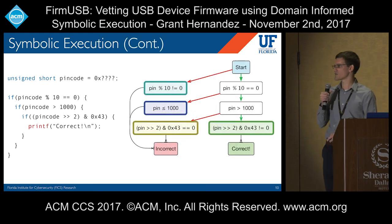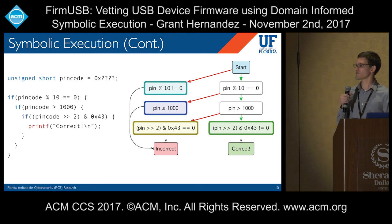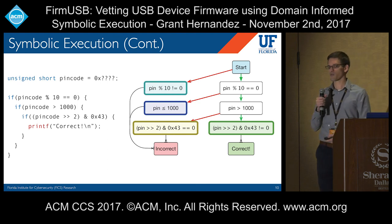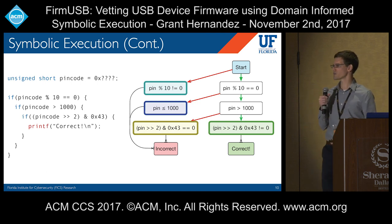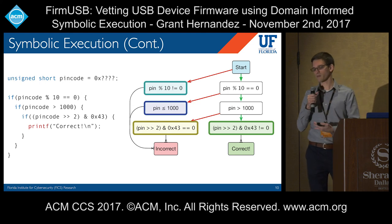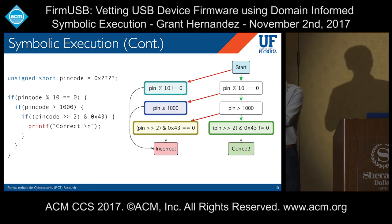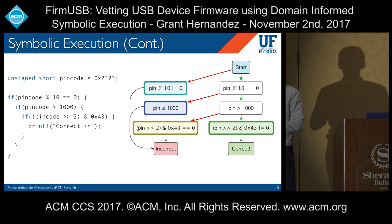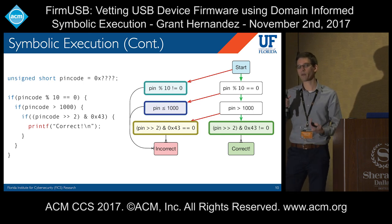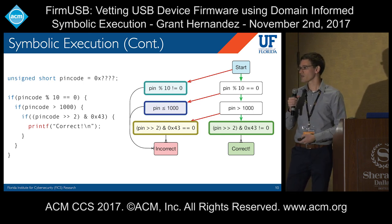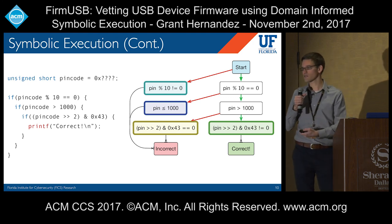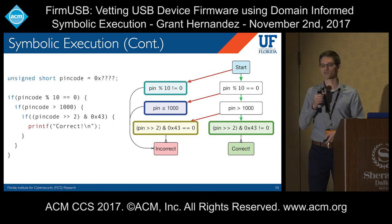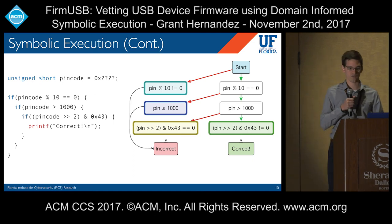If you start symbolic execution at the start statement, you begin with one path or state. At each decision — left or right, true or false — if the pin variable is symbolic, meaning it can take on more than one value rather than a fixed concrete value, you must split into two states because there are two possibilities. Next step would be three states, then four states. Finally, one state reaches the correct statement with constraints applied, from which we can solve for the pin code.